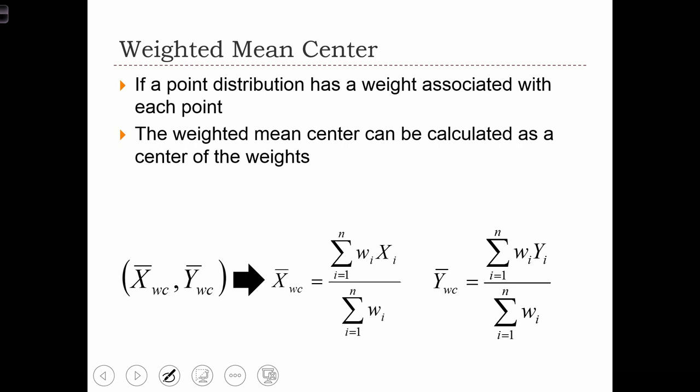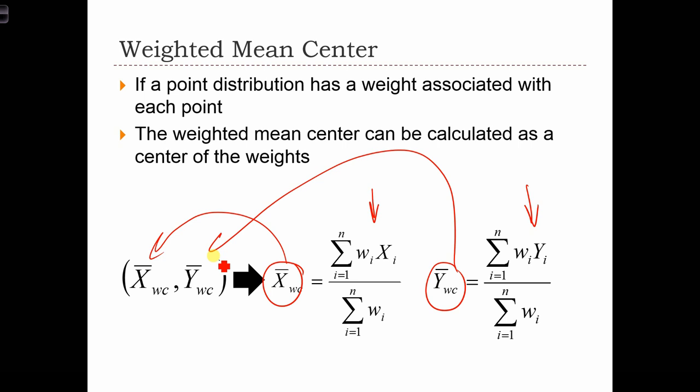In the event that a point distribution has a weight associated with it, then we should be using the weighted mean center to calculate the center of the weighted locations. Here again, this is a simple analog to the weighted center of aspatial data. All we are going to do is use the weights to come up with a weighted mean of the x-coordinates and a weighted mean of the y-coordinates. We're going to calculate the x and y component of the weighted center and save that as a new point, which is going to be the weighted mean center.